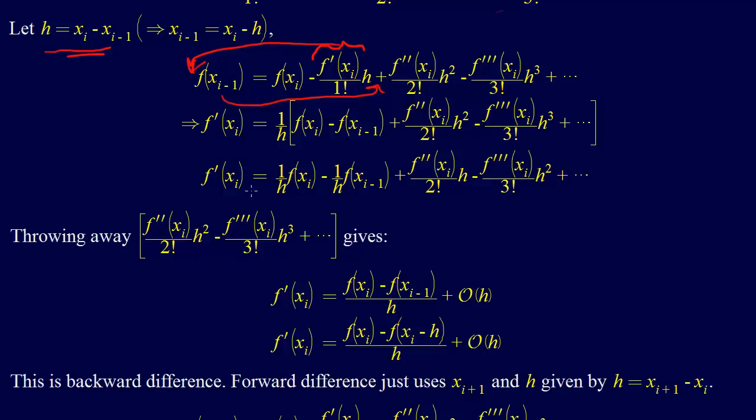Now we have all these terms here. These are our second and third derivative terms. Now we can just throw those away. This keeps going, and we just throw those away. When we throw them away, we incur error, so we'll have some error by doing that. But that's where it's an approximation. So when we do that, we get f prime at x i equals f of x i minus f of x i minus 1 over h plus this error on the order h.